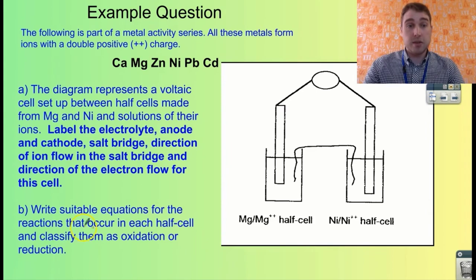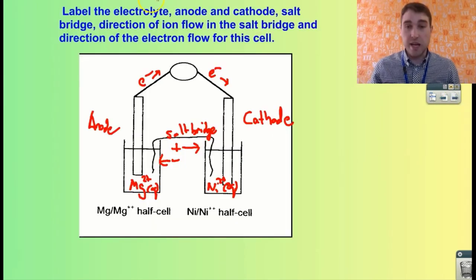The last part of the question says write suitable equations for the reactions that occur in each half cell and classify them as oxidation or reduction. Okay. So at our anode, we've got our magnesium that's being oxidized.